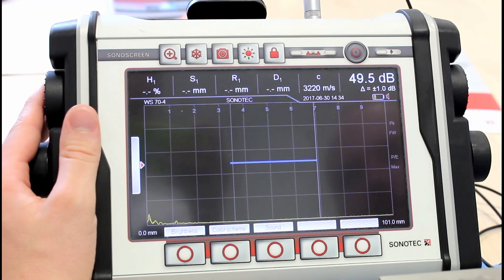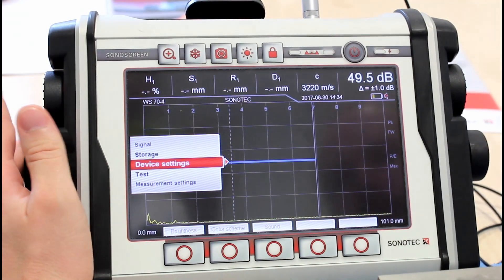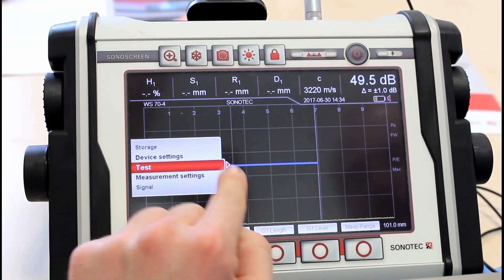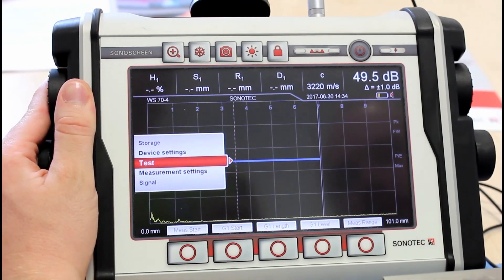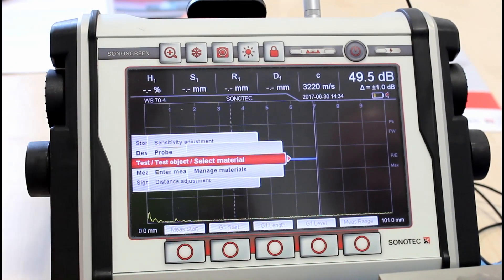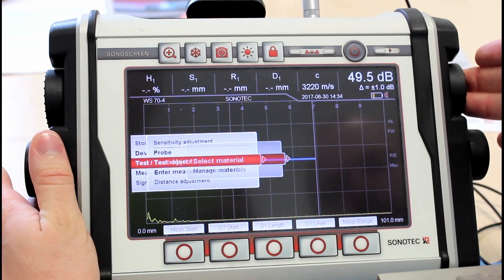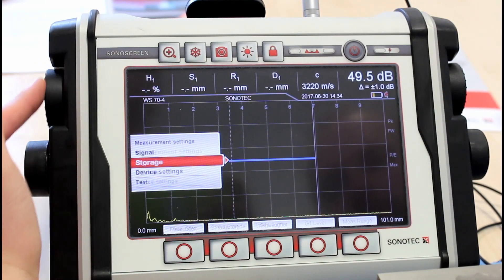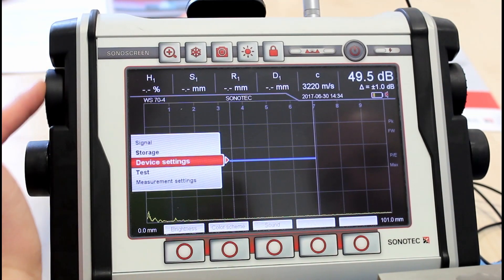In order to go into the menu, you simply push the left hand wheel and whenever you see an arrow, you can go further into the menu. In order to go back, you push the right hand wheel. To navigate up and down, simply scroll the wheel up and down.